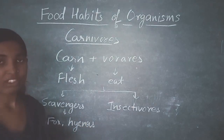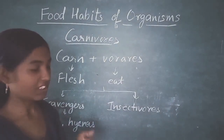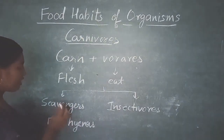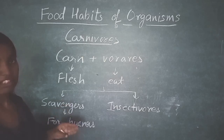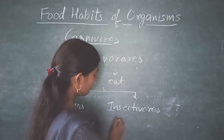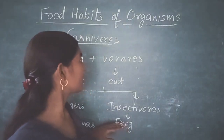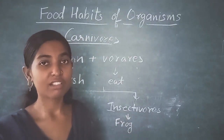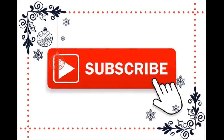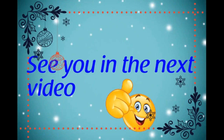Scavengers, whose examples are fox and hyenas, eat dead flesh - they eat whatever flesh is left after lions or tigers have eaten. They do not eat fresh flesh but eat the useful waste left by other animals. Insectivores are those species which eat insects - for example, the frog, which eats insects. Because it eats only small insects, we call it an insectivore rather than a carnivore. That's all for today's video; I hope you understood the topic.